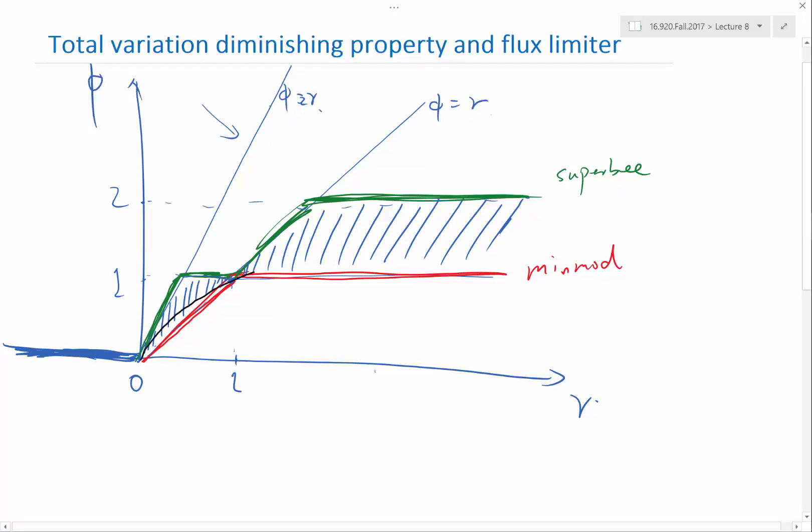The Van Leer limiter goes like this. So it's a smooth curve. It's like 2R over 1 plus R. So that's probably the easiest to implement limiter for all kind. It's also the behavior is kind of in between mean mod and super B.